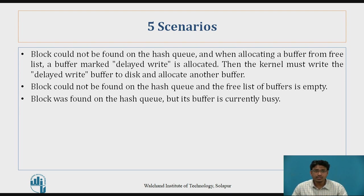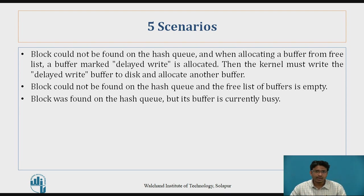In the third scenario, the kernel will allocate the buffer from the free list, but that particular buffer is marked delayed write. Delayed write means that particular buffer or data block has been modified by some process and is still available in the buffer but has not been written back to the disk. If that delayed write buffer is allocated to any process, the data would be overwritten — causing data inconsistency.